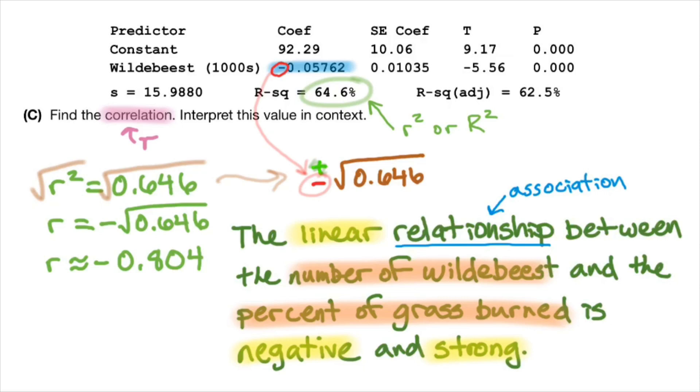The astute student will notice that a phrase like this is very similar to just being asked to describe the relationship or the association of a scatterplot. And that's true. I like to have my students make the correlation be slightly special by saying that it's the linear relationship between blah, blah, blah, instead of just saying the relationship between these things is negative, linear, and strong. I like to get that linear out there first.